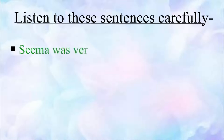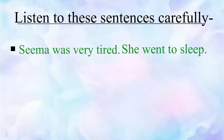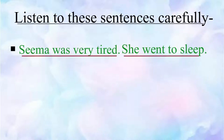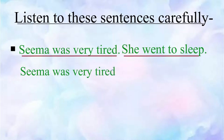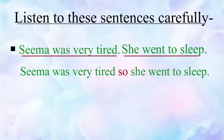Seema was very tired. She went to sleep. These are two independent statements which are trying to say that Seema was very tired and she went to sleep. Instead of using two sentences, we can express the same meaning in just one sentence. We can say: Seema was very tired, so she went to sleep.